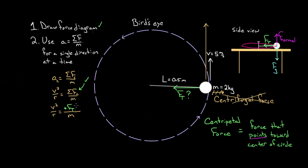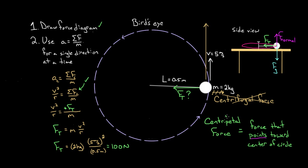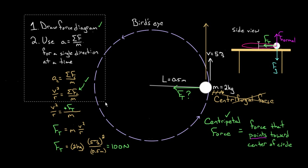So we can come back and solve for the force of tension. Multiplying both sides by mass, the force of tension equals mass times speed squared over the radius. Plugging in values: mass is two kilograms, speed is five meters per second (don't forget to square it), divided by the radius of 0.5 meters — you get that the force of tension is 100 Newtons. You might think this was too much work for a simple problem, but other problems won't be easy, and without a problem-solving framework, you'll be shooting blind.